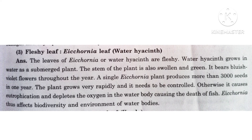Fleshy leaf — Eichhornia (Water hyacinth). Answer: The leaves of Eichhornia or water hyacinth are fleshy. Water hyacinth grows in water as a submerged plant. The stem of the plant is also swollen and green. It bears bluish-violet flowers throughout the year. A single Eichhornia plant produces more than 3000 seeds in one year. The plant grows very rapidly and needs to be controlled. Otherwise, it causes eutrophication and depletes oxygen in the water body, causing the death of fish. Eichhornia thus affects biodiversity and the environment of water bodies.